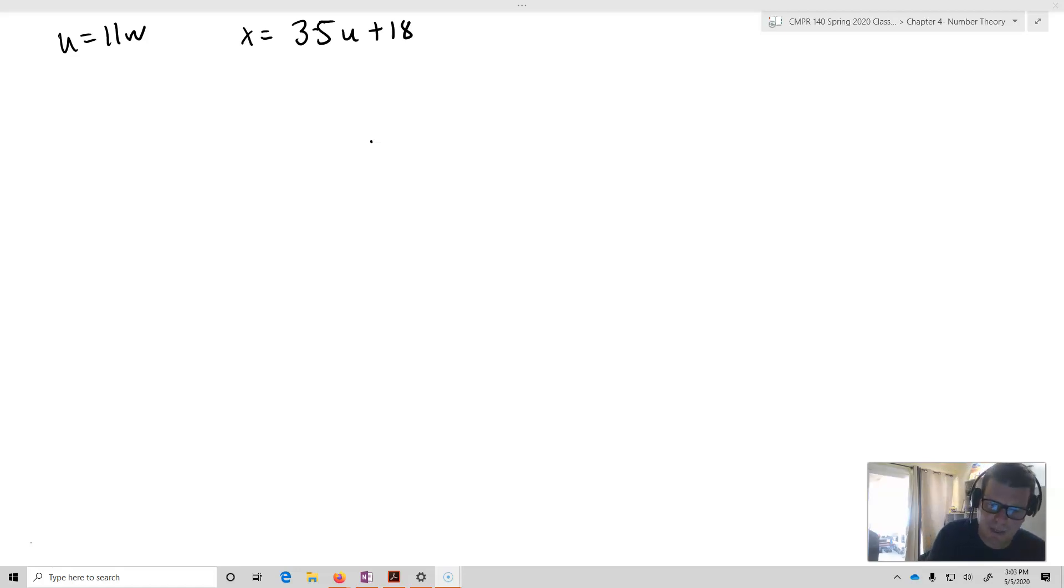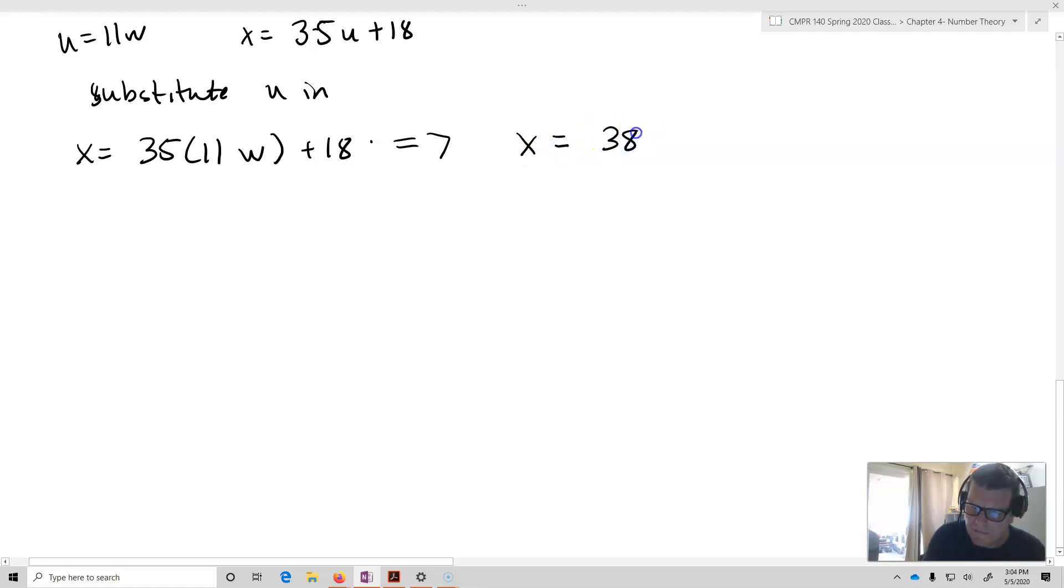So now I have that u equals 11w, and x equals 35u plus 18. So since that's the case, what I'm going to do is I'm going to substitute u in. And what that gives me is that x equals 35 times 11w plus 18. And that means that x is equal to 385w plus 18.